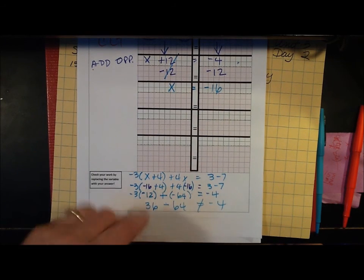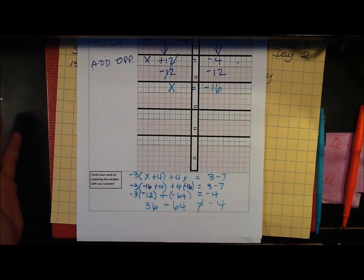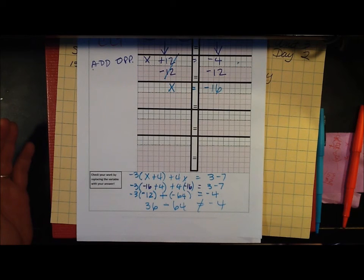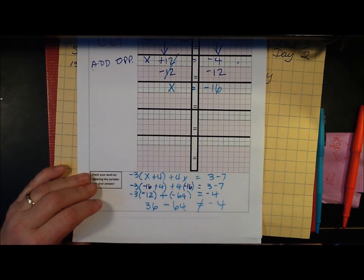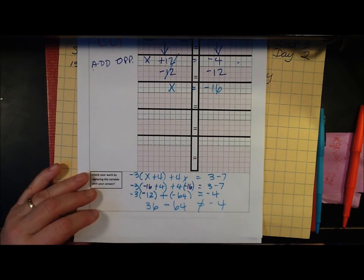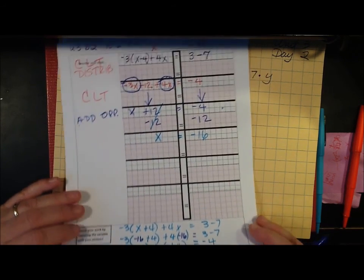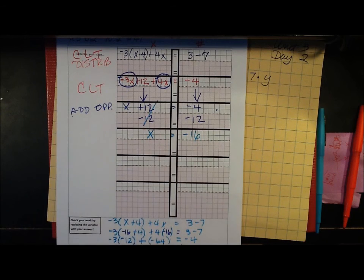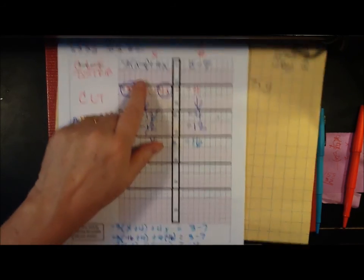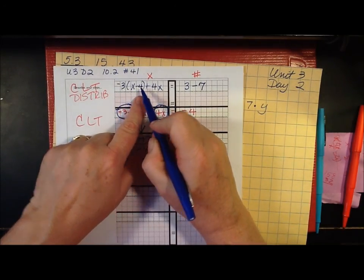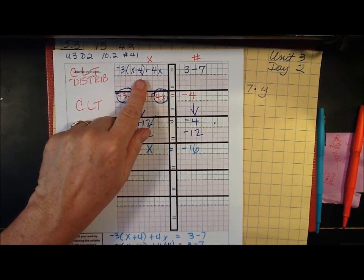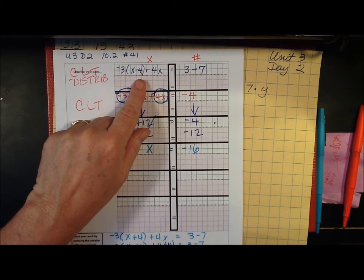So I went back and I looked at this and I checked my work. And this is an important lesson. If things don't match, go back and make sure you copied the problem correctly. And if you look very carefully, I'm sure most of you have already noticed this except I didn't because I was going too fast. The original problem is negative 3 times x minus 4. And down here I wrote negative 3 times x plus 4. And that kind of changes things.